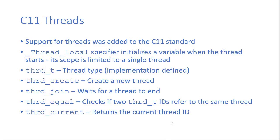There's a thread type, thrd_t, that is implementation defined — this is how we keep track of thread IDs. There's a thrd_create function that creates a thread. thrd_join waits for a thread to end. And there are also utility functions such as thrd_equal and thrd_current. thrd_current returns the ID of the current thread, and thrd_equal checks to see if two thread IDs refer to the same thread. This is not an exhaustive list — if you want more detail, there are many references for all the thread functionality in the C11 standard.